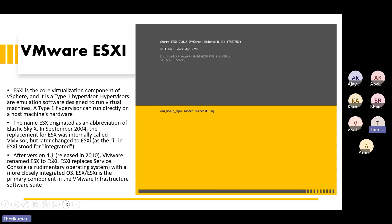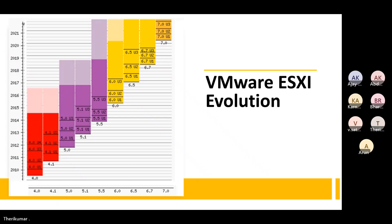In version 4.1, VMware renamed ESX to ESXi. The hypervisor is called ESXi from version 4.1 onwards. ESXi means integrated.